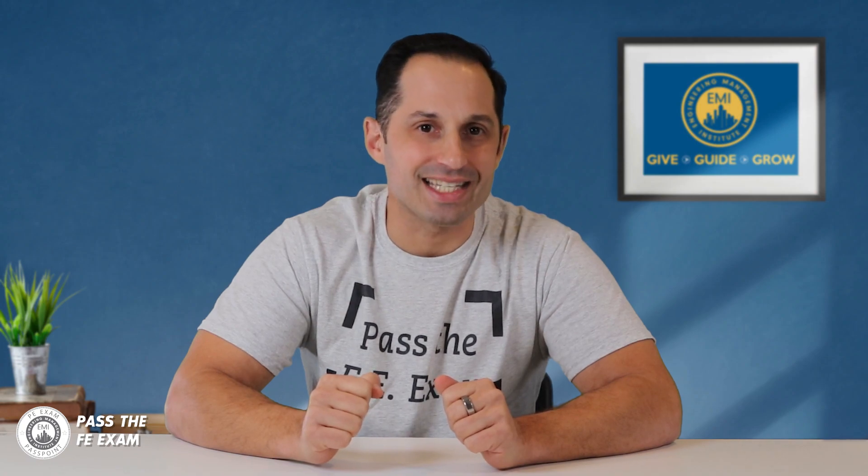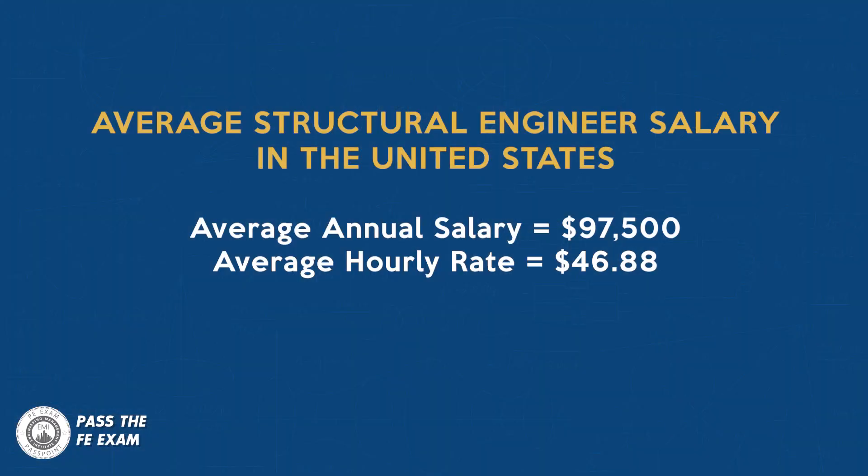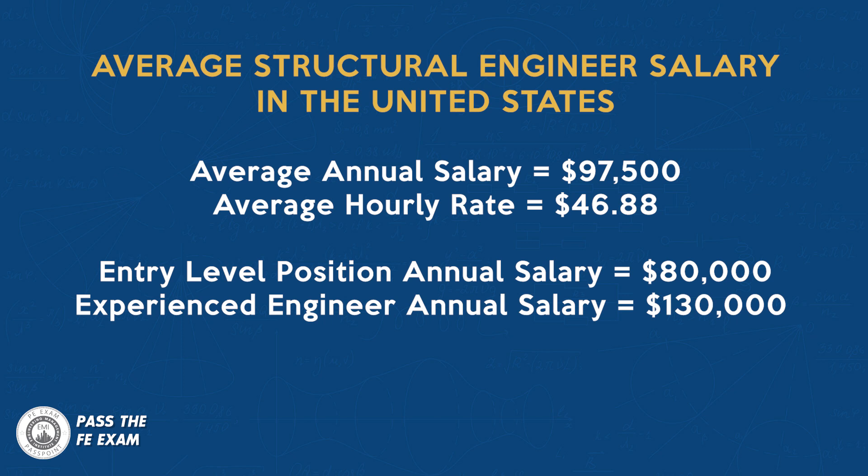If you're wondering how much you will get paid once you qualify as a structural engineer — and I'm sure you are — the average structural engineering salary in the United States is $97,500 per year, or $46.88 per hour. Entry-level positions start at about $80,000 per year, while an experienced structural engineer can make approximately $130,000 per year.